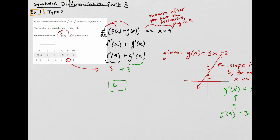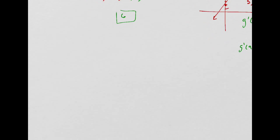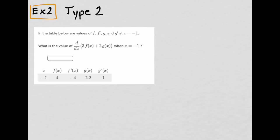So there we go. Hopefully this is making sense. If not, pause it and ask a question. All right, let me talk about this. It says, in the table below are values of f, f prime, g, and g prime when x equals -1. So f of -1 equals 4, f prime of -1 equals -4, g of -1 equals 2. It's just a table organizing this information.